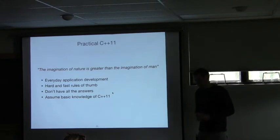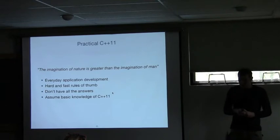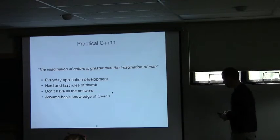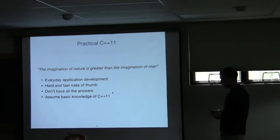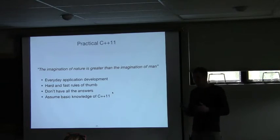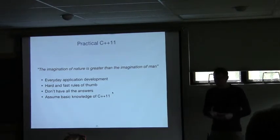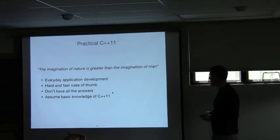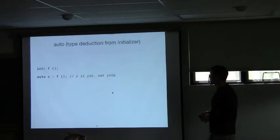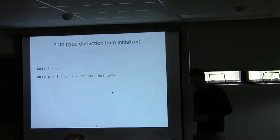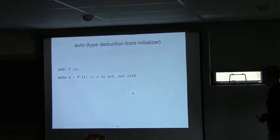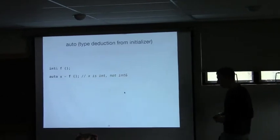I also don't pretend to have all the answers. In fact, there's one problem that I'm going to talk about for which I don't really have a good answer. So I'm hoping maybe you guys will also teach me a thing or two. Finally, this is not an introduction to C++11. In particular, I assume basic knowledge of r-value references, perfect forwarding, auto, and the range-based for loop. And let's start with auto, or type deduction from initializer as it is formally known.